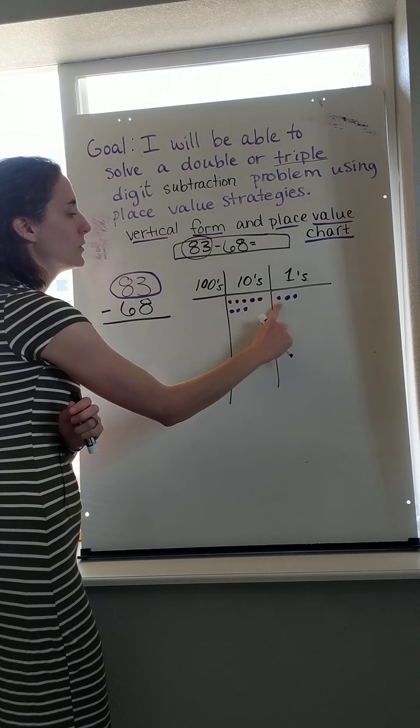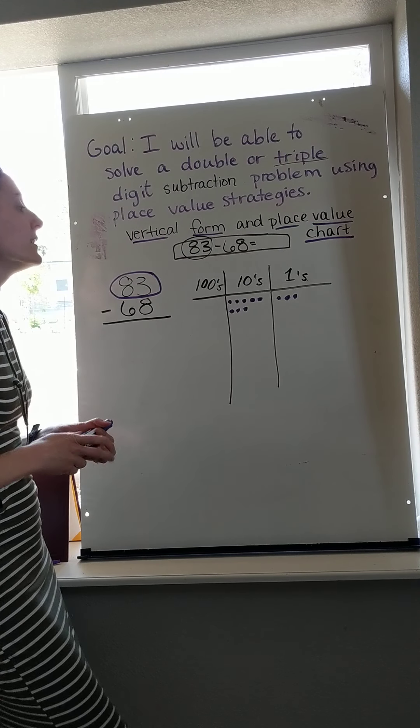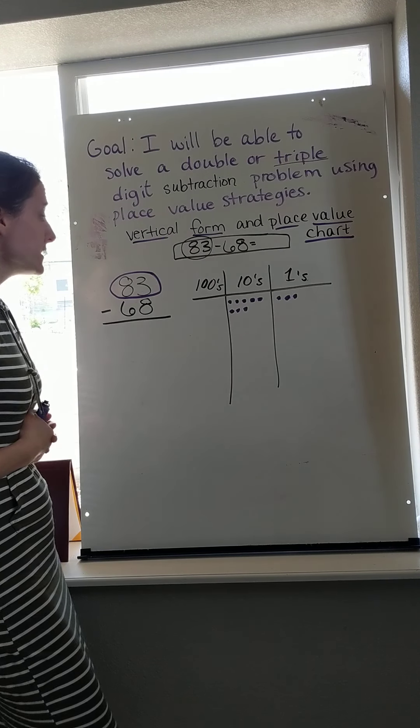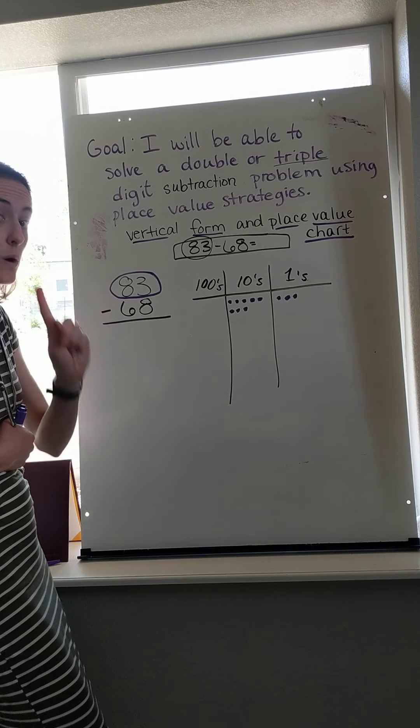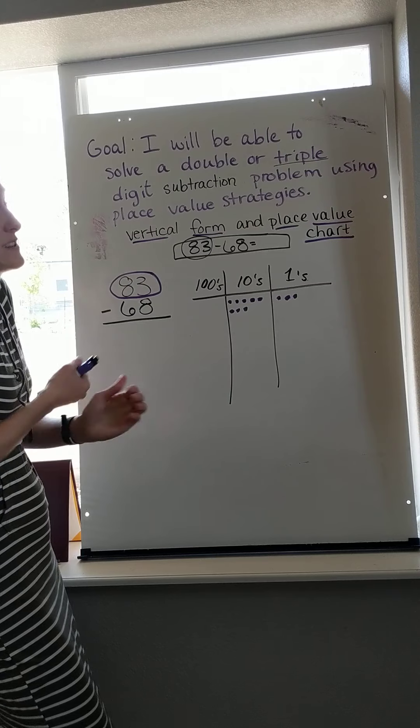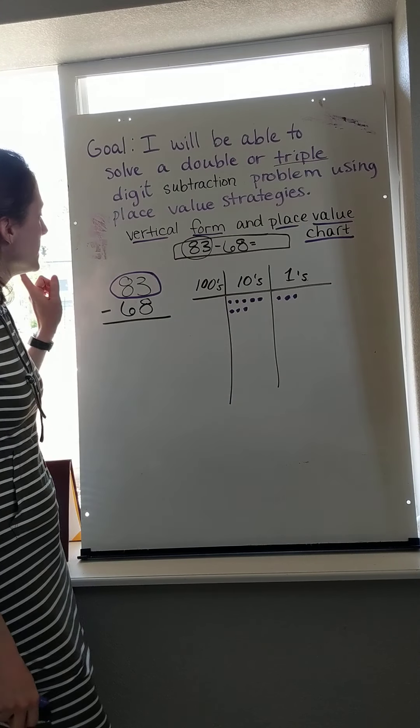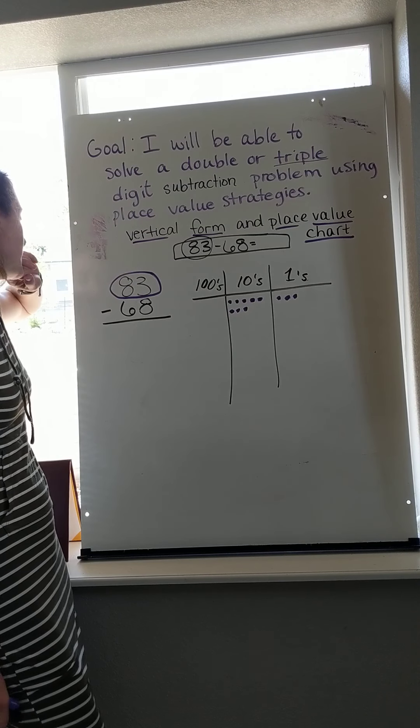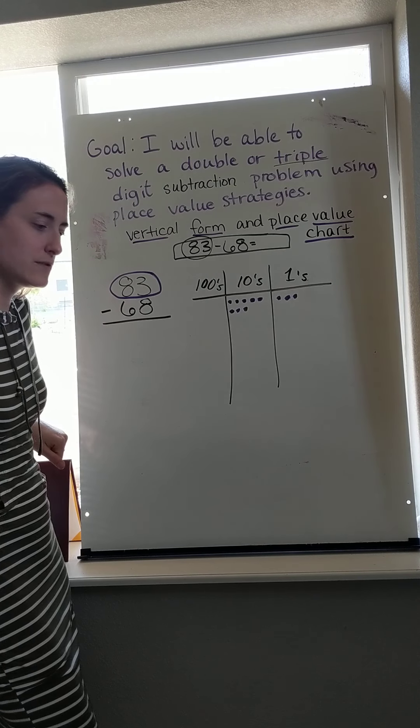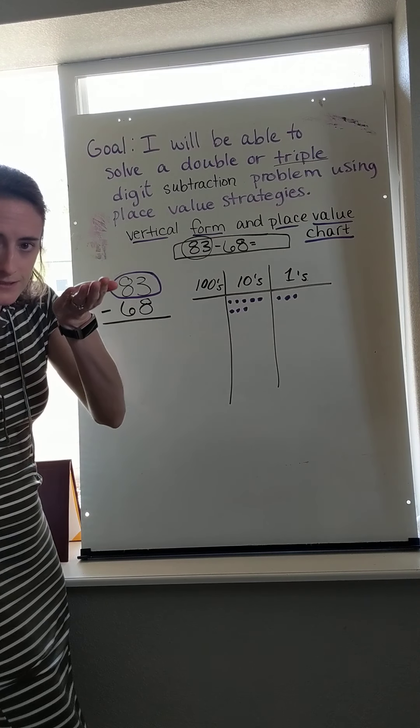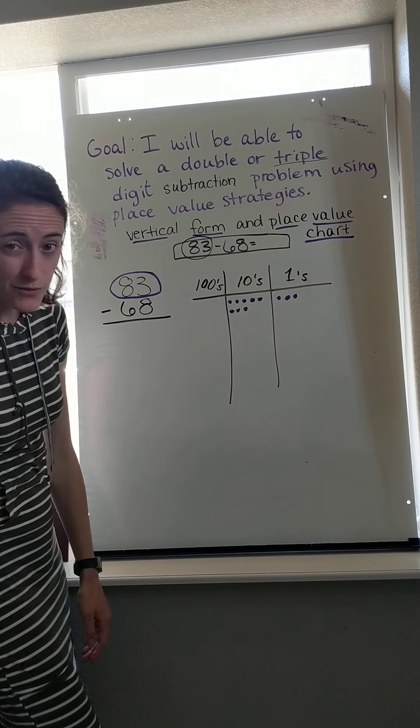Now I might be ready to subtract, but first I check: do I have enough on top to take away what's on the bottom? I always check that first because otherwise I can't subtract yet. I might have to rename my problem. So I have three ones, and I have to take away eight. If I have three pieces of candy, can I give eight to you? I cannot. I only have three.